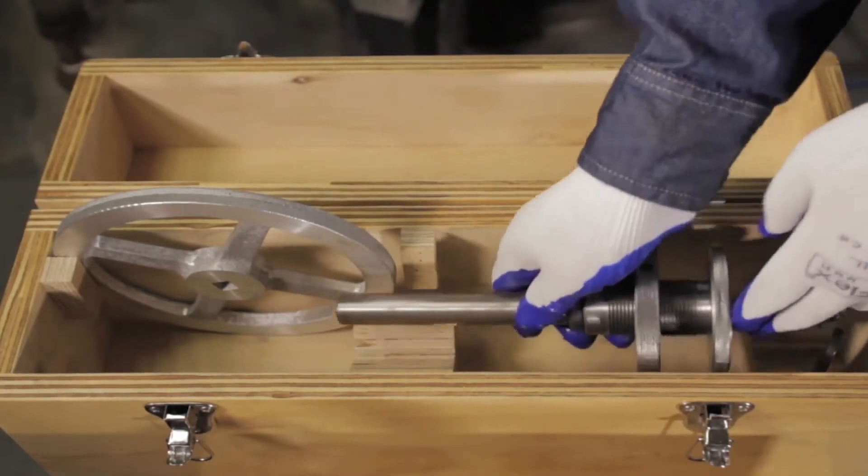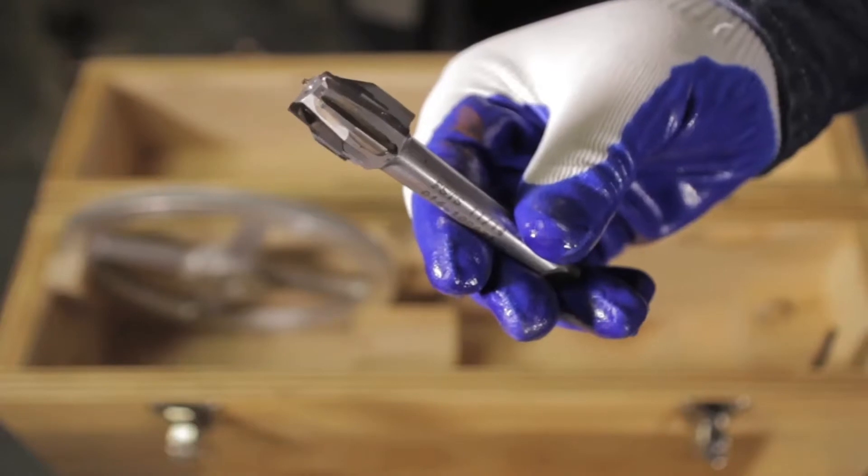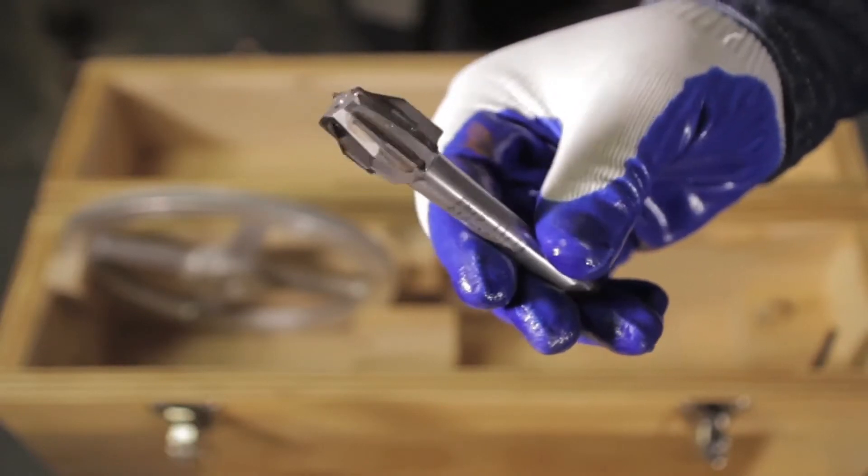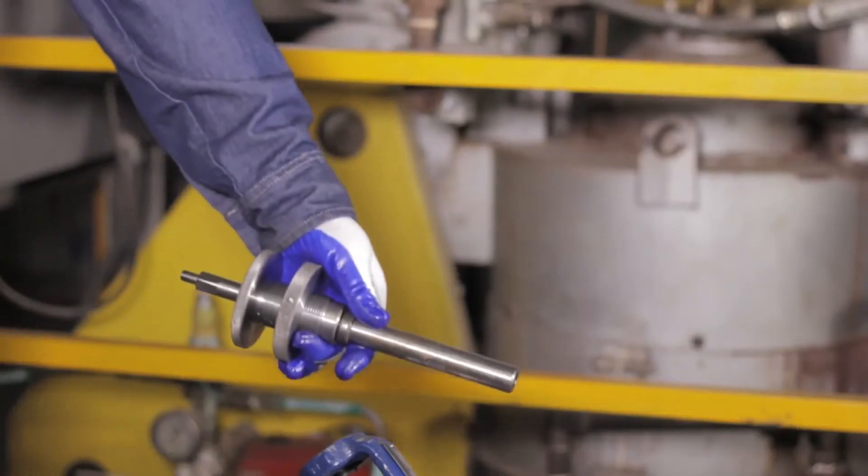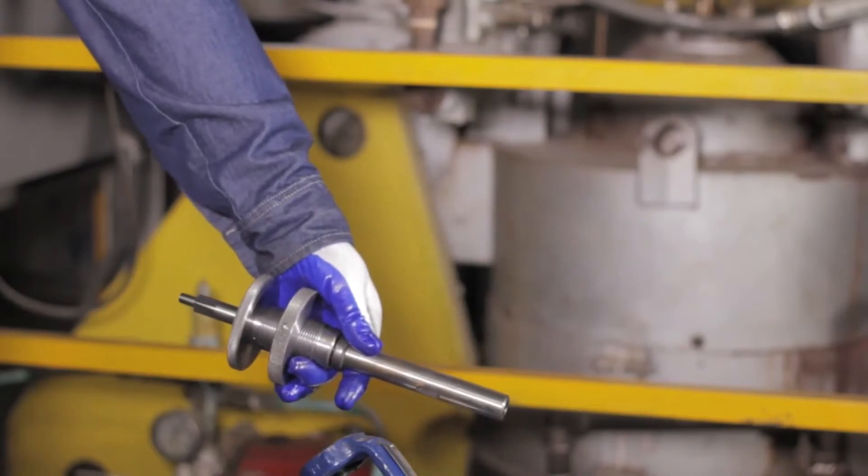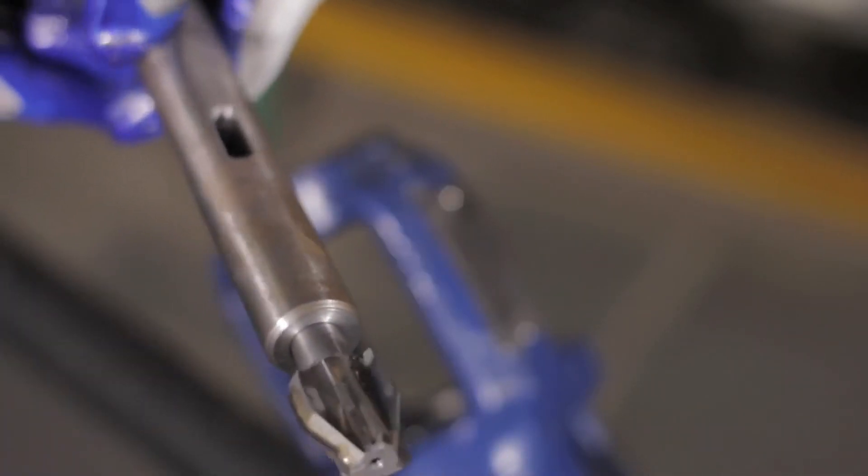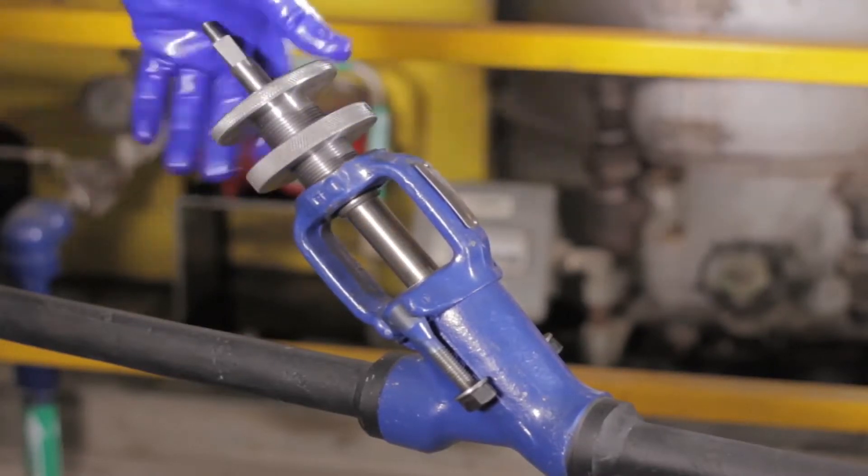The Welbond valve seat is a stellite casting, thick enough for the renewal of the seating surface several times over. The valve renewal is not a lapping operation. Instead, the seat cutting tool creates a whole new seating surface. Snap the seat cutting tool together and thread it into the yoke.